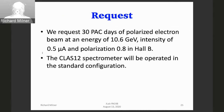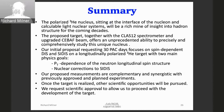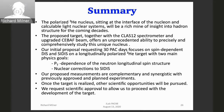Our request is 30 PAC days, polarized electron beam at the highest operating energy of 10.6 GeV, the highest available intensity for the foreseeable future of 0.5 microamps, and polarization of 0.8 in Hall B. The CLAS spectrometer would be operated in standard configuration. In summary, we believe that over the coming decades, the polarized helium-3 nucleus — which sits at the interface of nucleon and calculable light nuclear systems — will be a rich mine of insight. The EIC is getting ready for that, and we think Jefferson Lab has an important role to play. It is anomalous that Hall B and CLAS12 does not have a polarized helium-3 target, and our proposal addresses that anomaly.